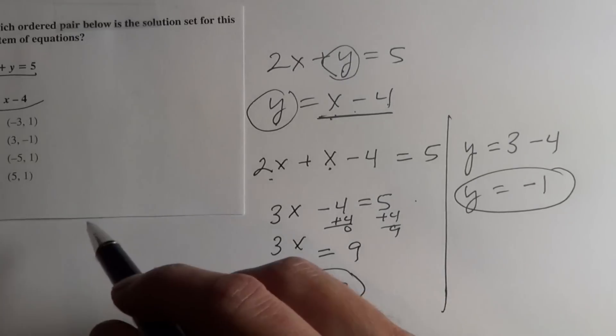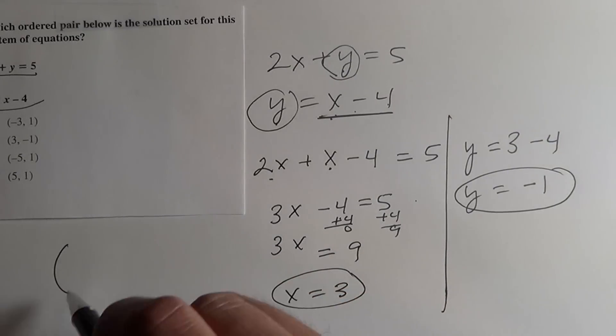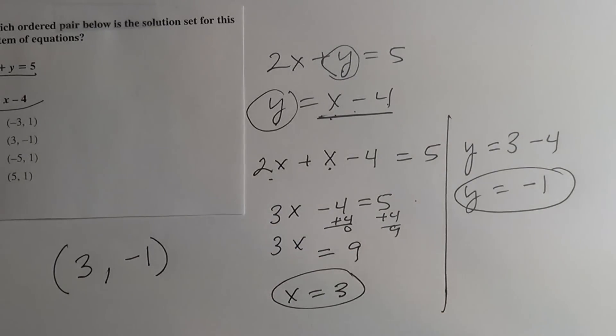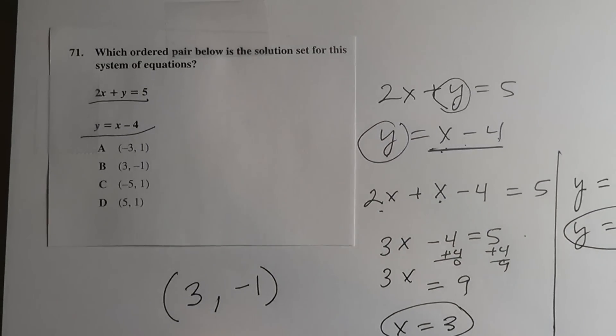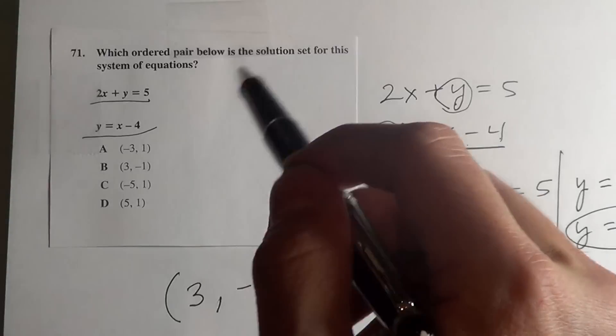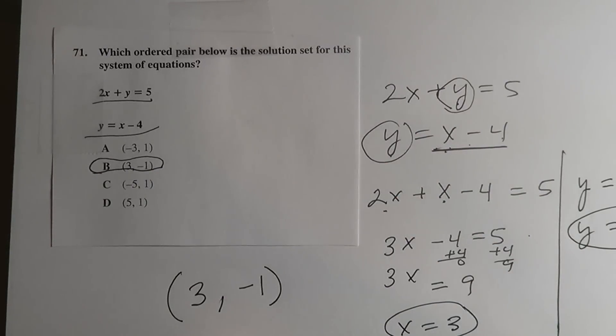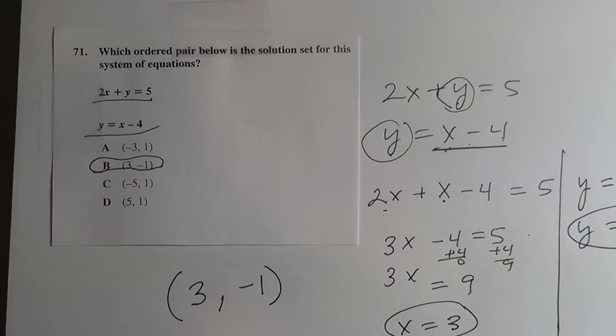So our answer is going to be x is 3, y equals negative 1. And there's the answer right there, B, 3, negative 1.